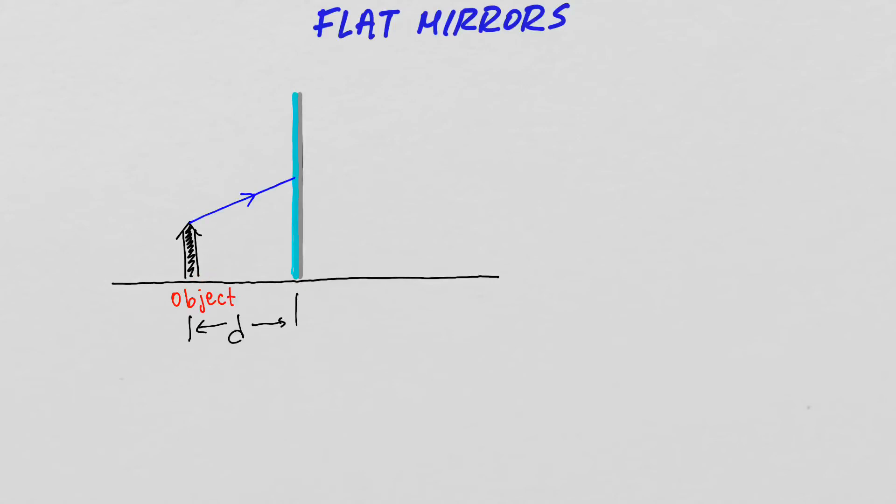So here is the ray emitted from the tip of the object. It is incident upon the mirror. So now it is going to reflect from the mirror, and the reflection is going to obey the law of reflections. Here is the normal to the surface, and here is the reflected light ray.